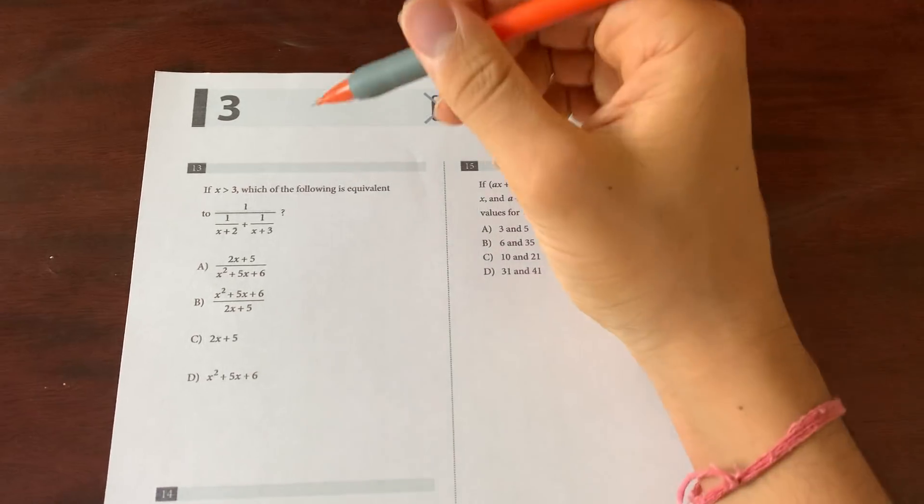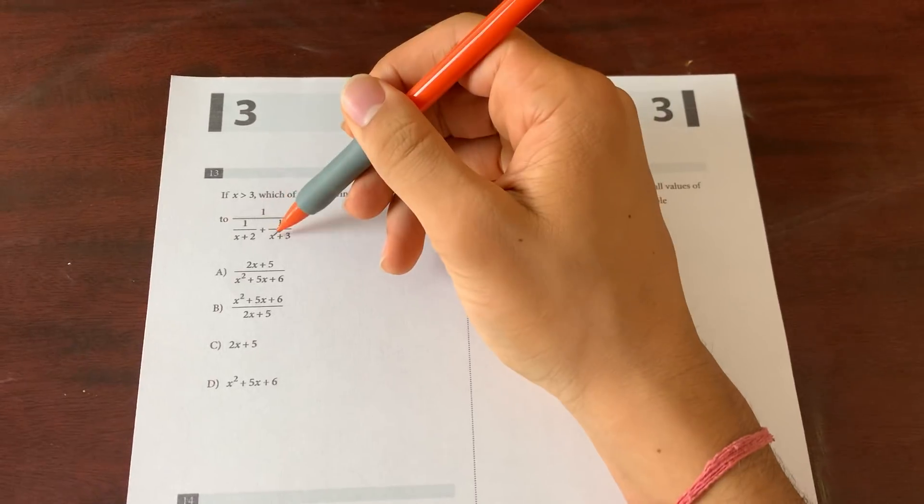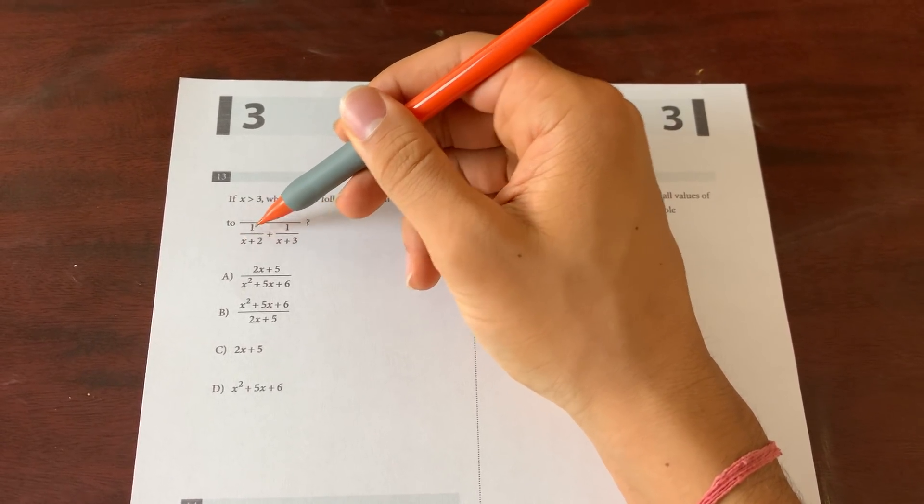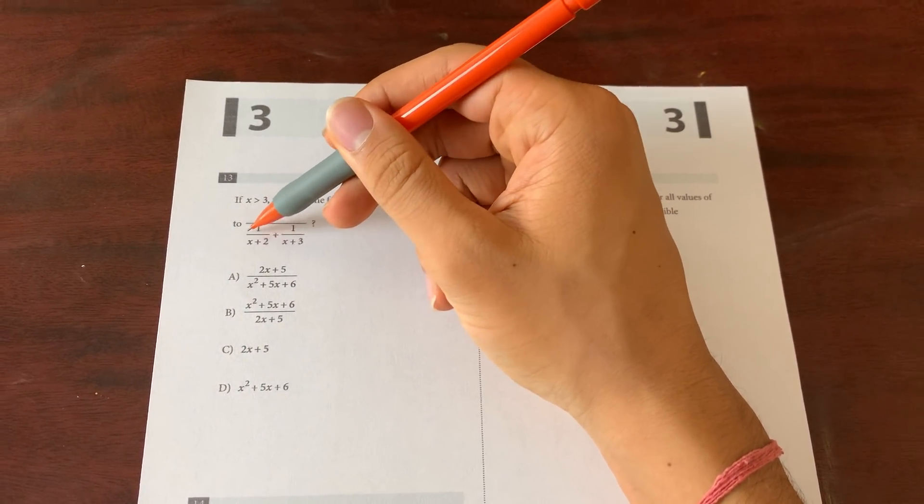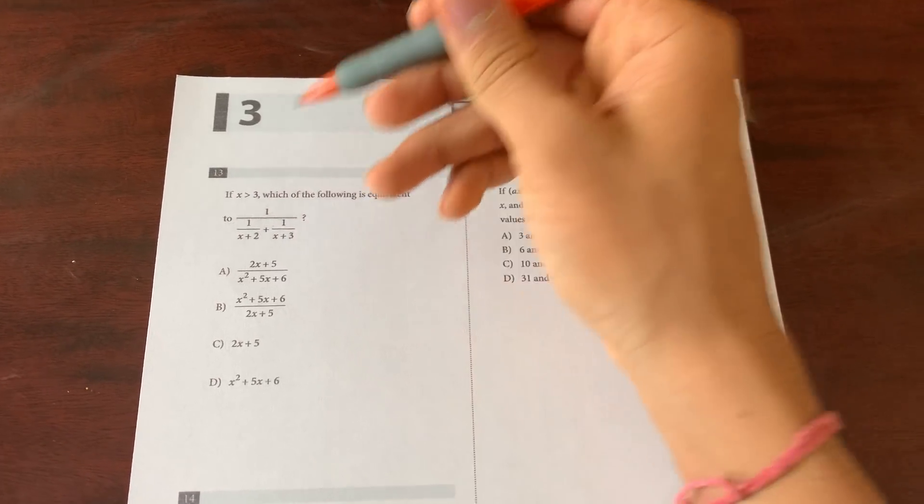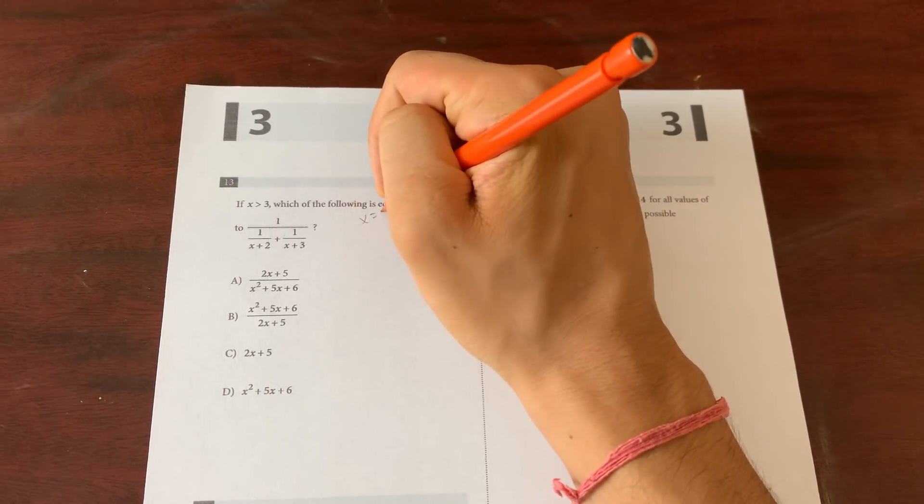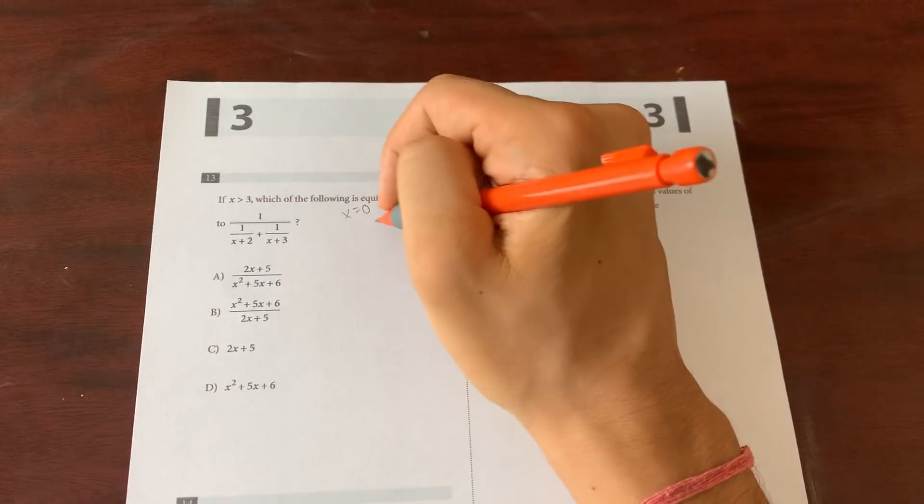First let's talk about this trick. This trick you guys can use all the time, nice and easy. If x is not equal to -3, which of the following is equivalent? What this problem wants you to do is make a common denominator, right? So you multiply by x times x+3 over here and x+2 over here, then you flip the fraction. Or what you could do is just pick a value for x.